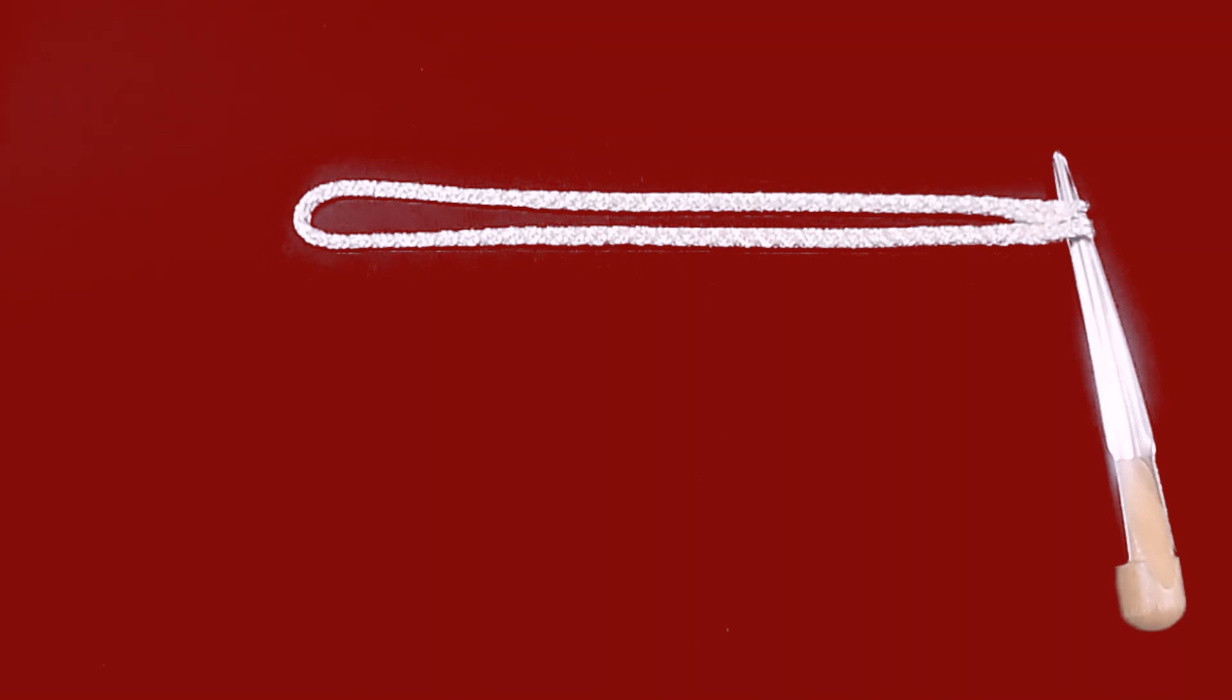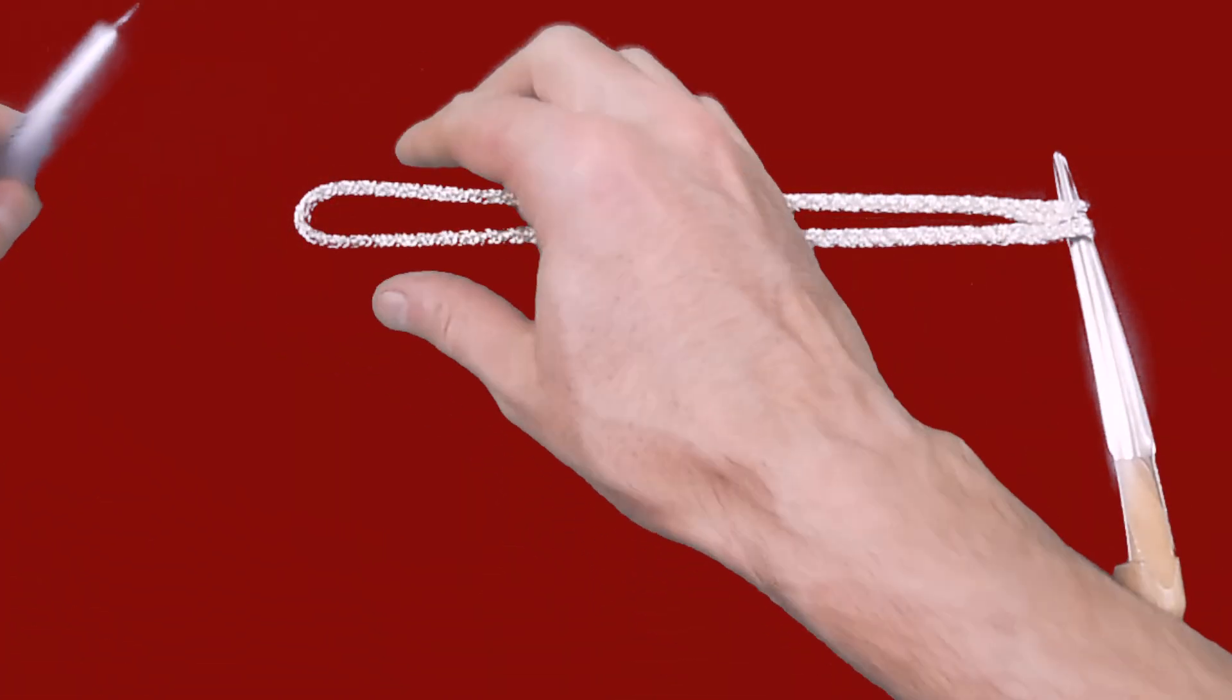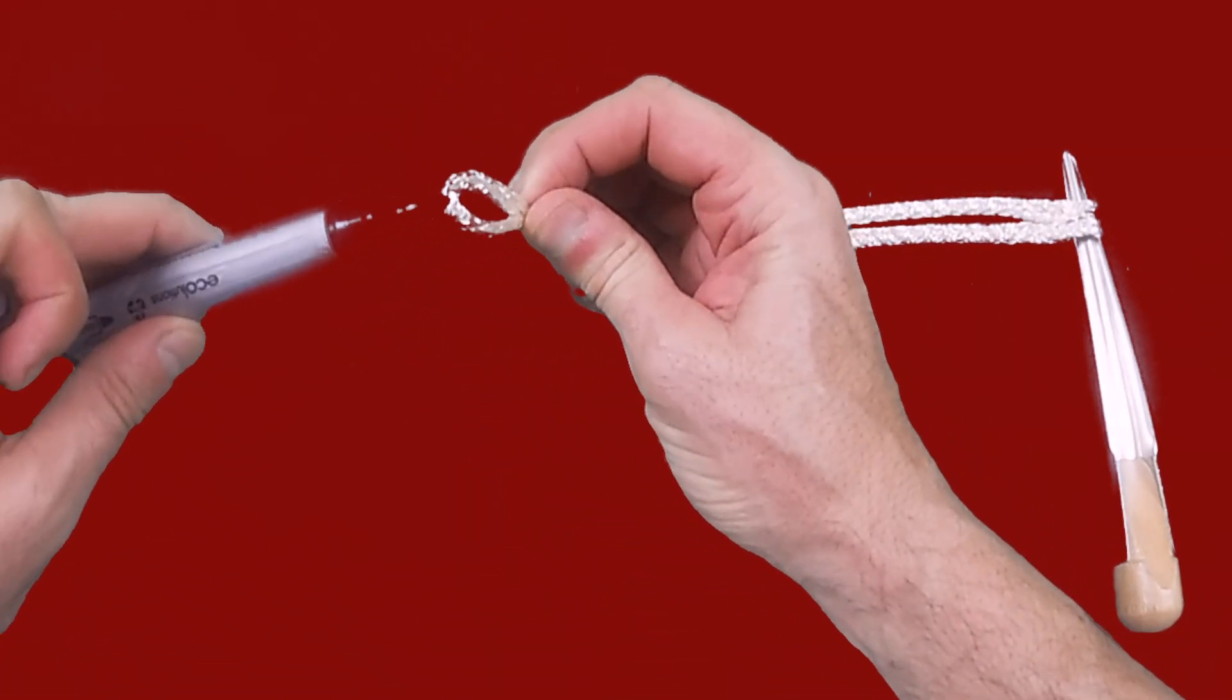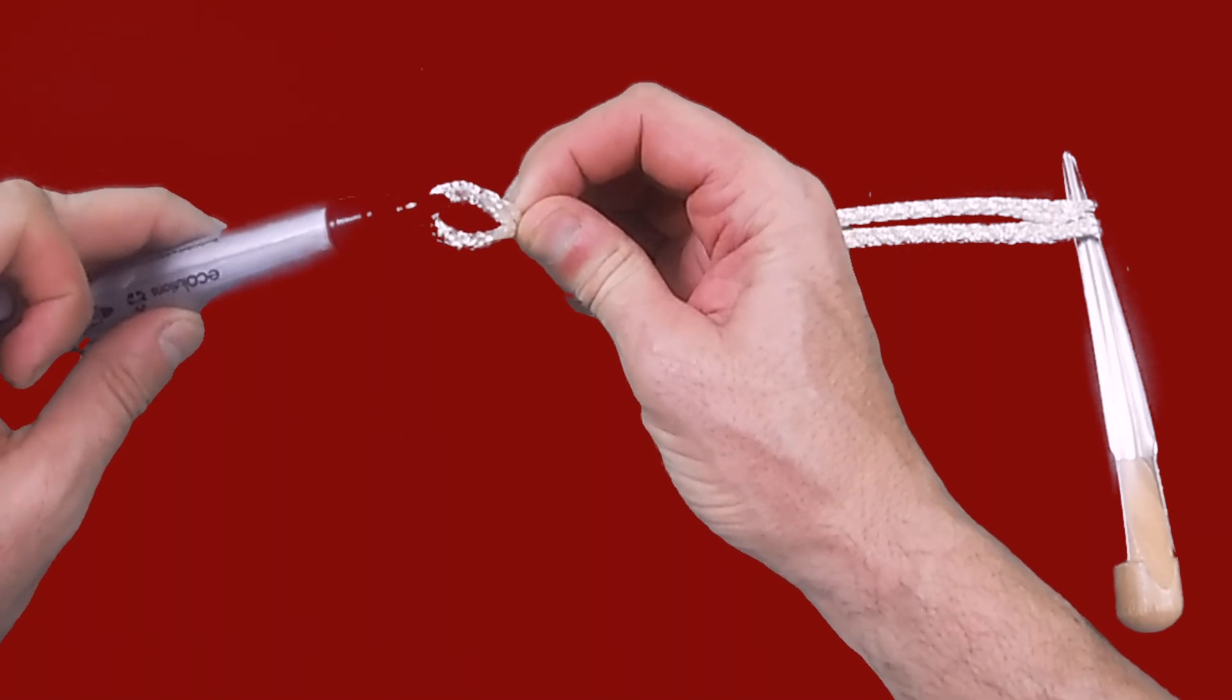You then want to take your marker pen and mark the top point of the shackle so that we can put in the locking loop.